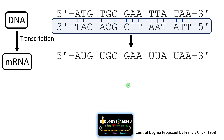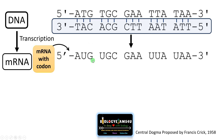Now we have an mRNA sequence that is formed from this template. The formation of mRNA from a DNA template is called transcription. These triplet, or three-letter nucleotide bases, are called codons. AUG is a codon, UGC is a codon. A codon is a triplet that codes for an amino acid or is a stop codon.